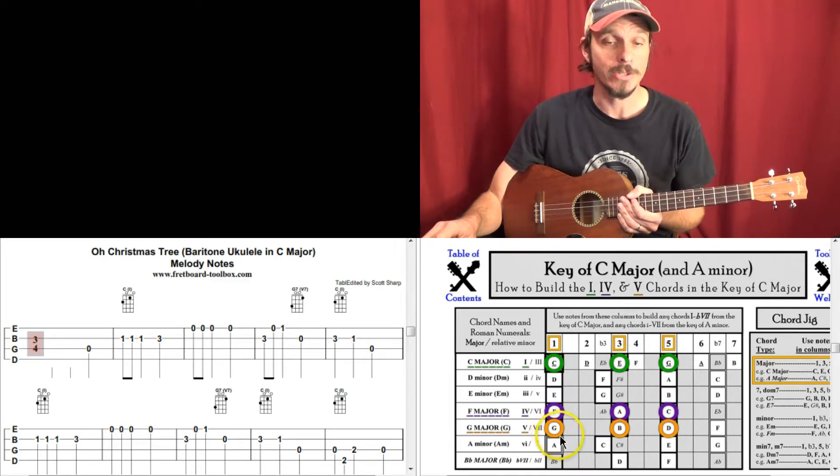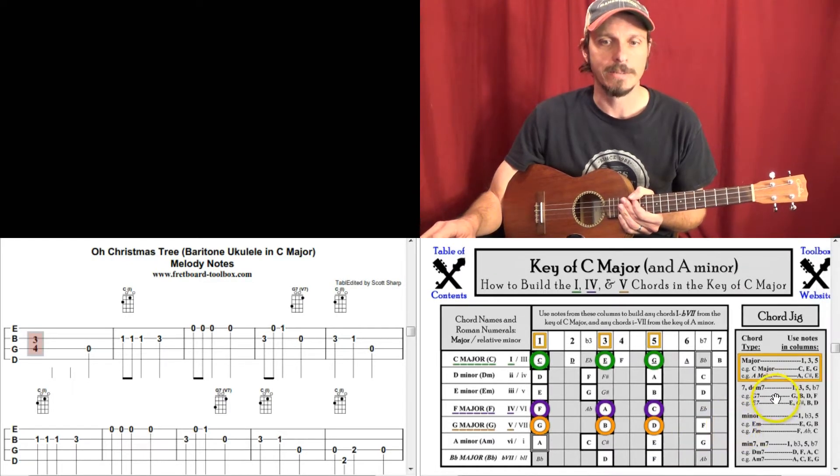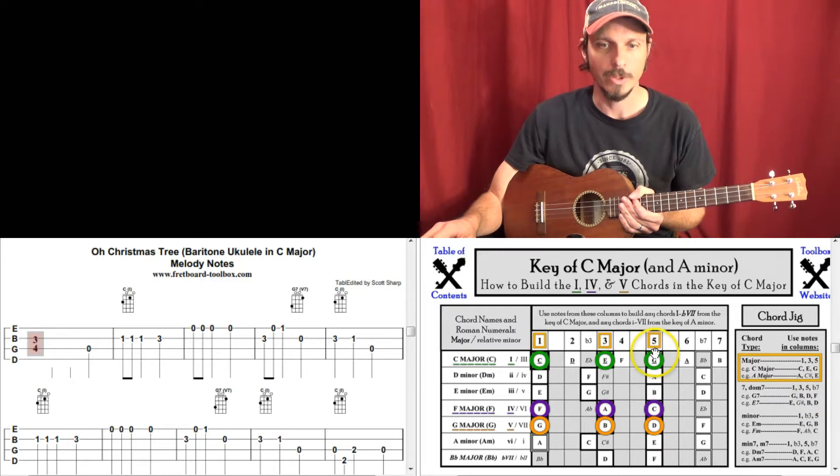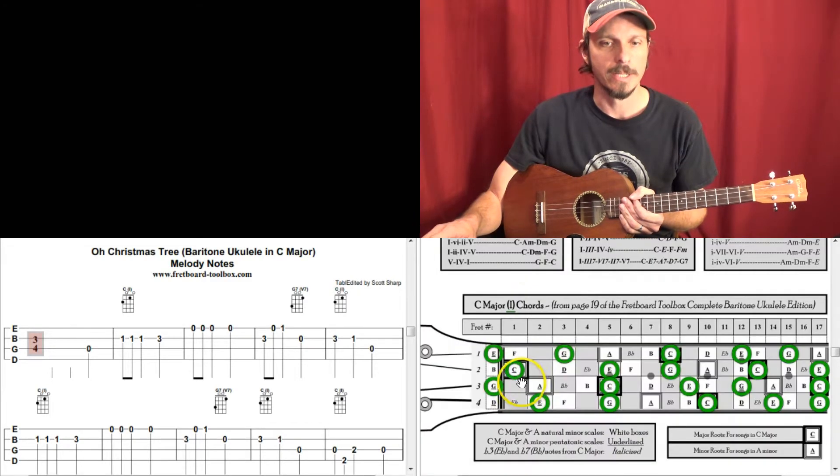And then for G majors, those are made of the notes G, B, and D on every instrument. But we're going to be playing G7, which means we've got to add this flat 7 note. Dominant 7 chords are 1, 3, 5 plus a flat 7. 1, 3, 5 is a major, and then flat 7 makes it a dominant 7.